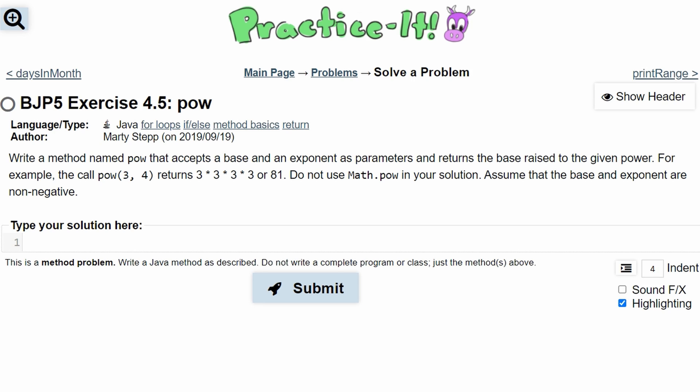In Practice-It exercise 4.5 pow, we need to write a method named pow that accepts a base and an exponent as parameters and returns the base raised to the given power.